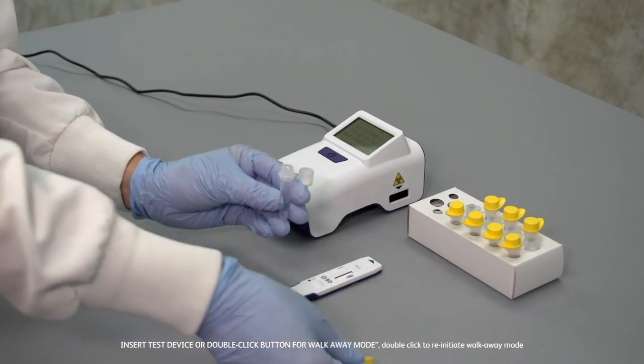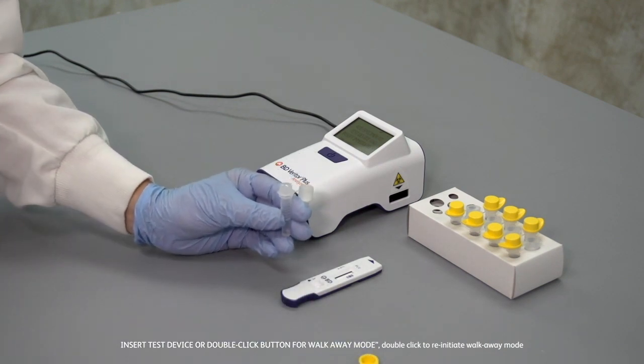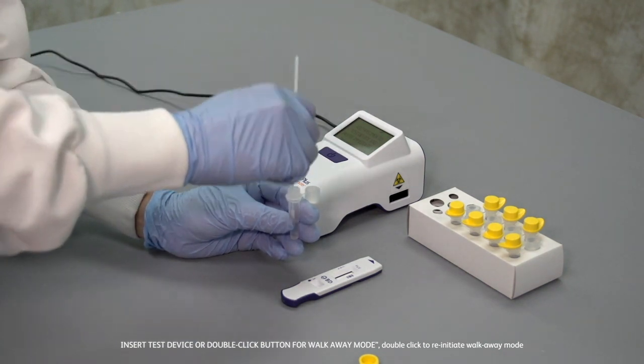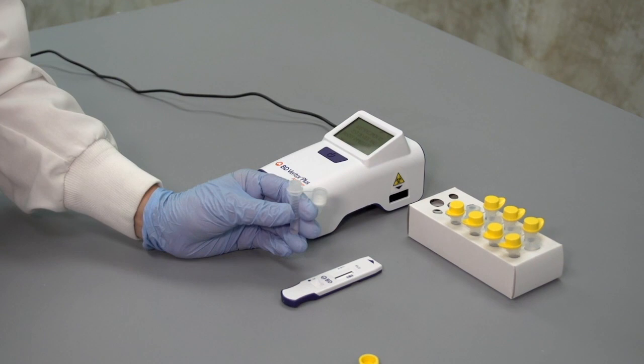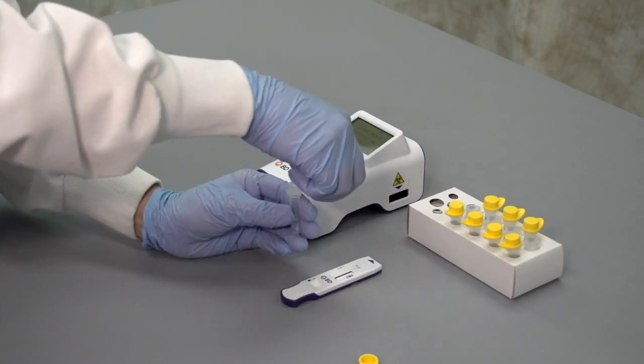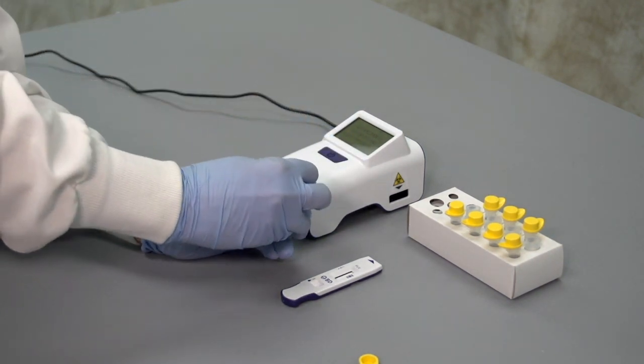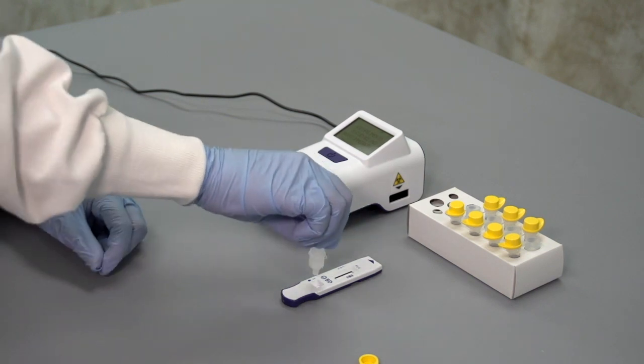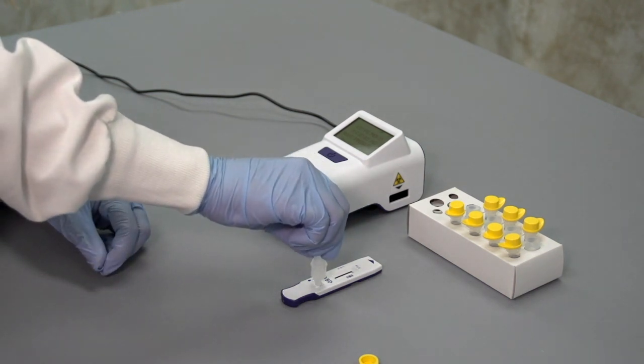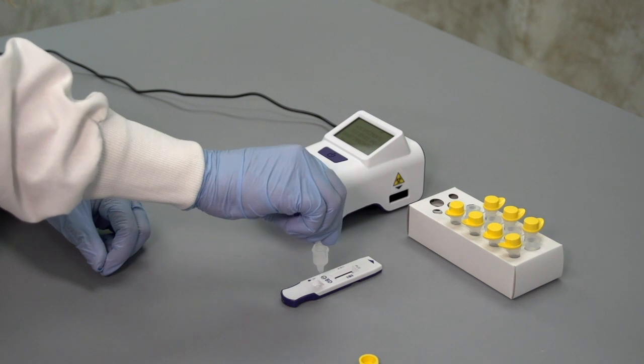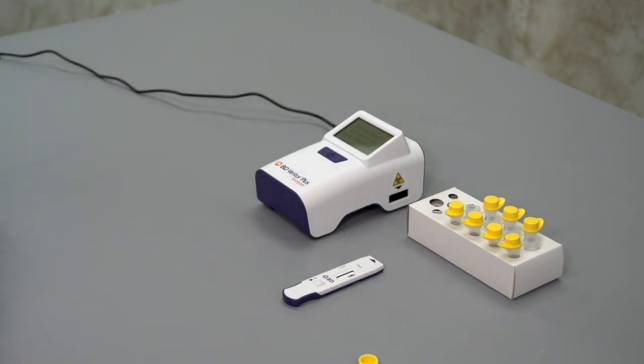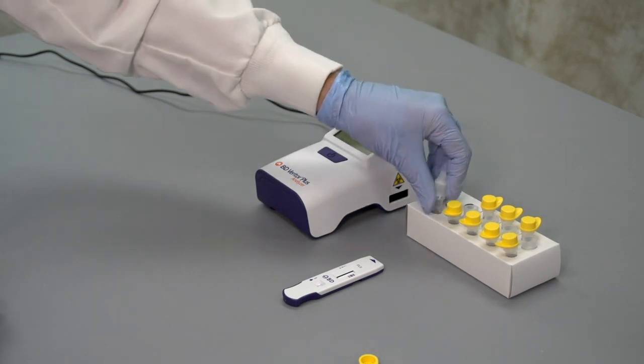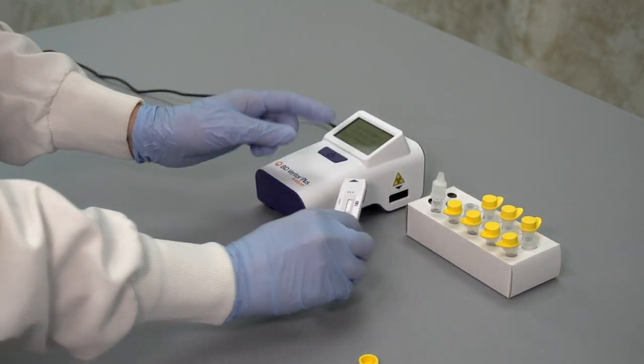A three-minute countdown timer will be displayed on the LCD screen indicating the time available to prepare the patient sample. The test device may be inserted any time during these three minutes. When the sample is prepared, add three drops of the processed patient specimen to the test device sample well and immediately insert the test device fully into the test device slot. A distinct click indicates when the test device is fully inserted.